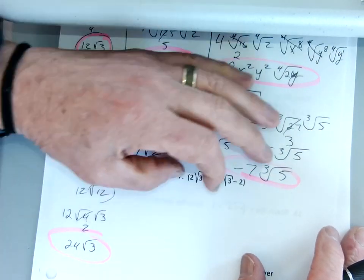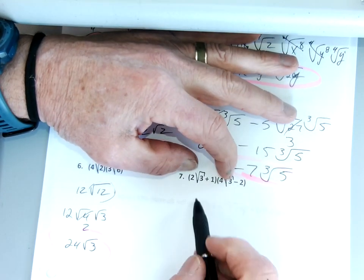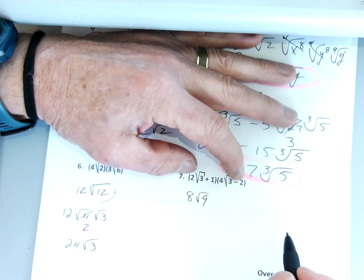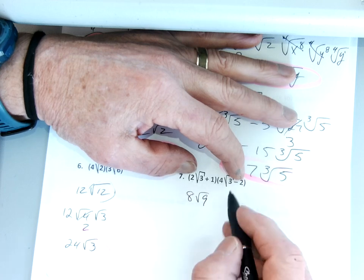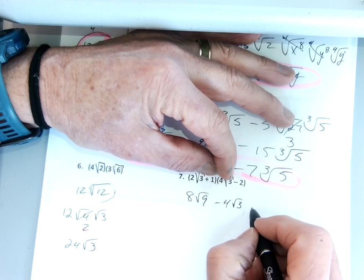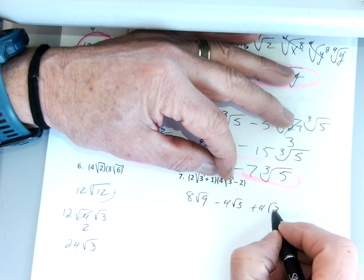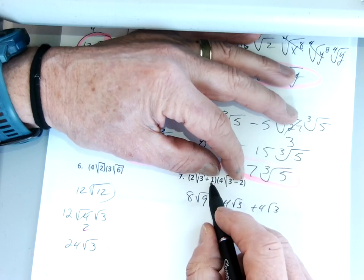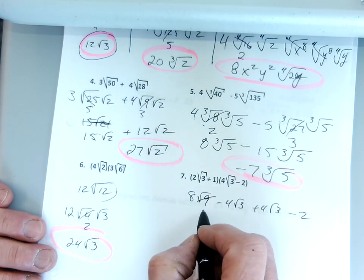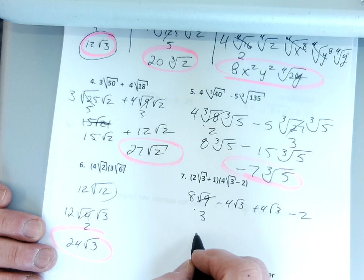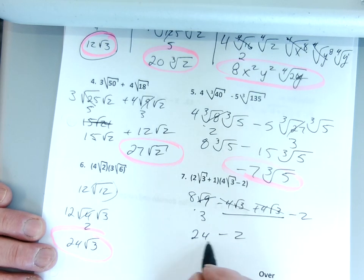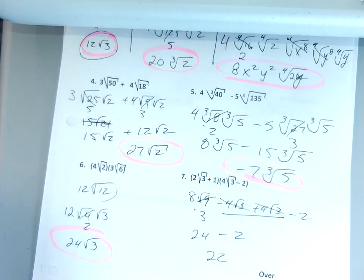Number seven: we're just going to have to FOIL. This times this — whole number times whole number — I get an 8 square root of 9. Then 2 square root of 3 times 2 gives negative 4, don't forget the square root of 3. 1 times 4 is 4 square root of 3. And 1 times negative 2 makes negative 2. Then I can simplify: square root of 9 is 3, so 8 times 3 is 24. The square root of 3 terms cancel each other out, and I get minus 2. 24 minus 2 is 22, and that is my answer — no roots, they all cancel.